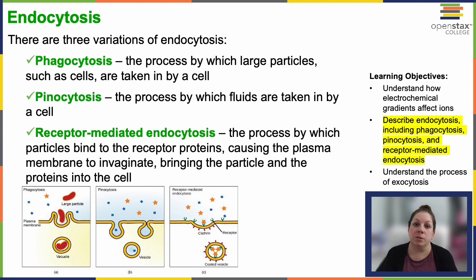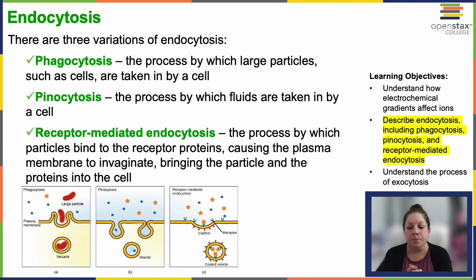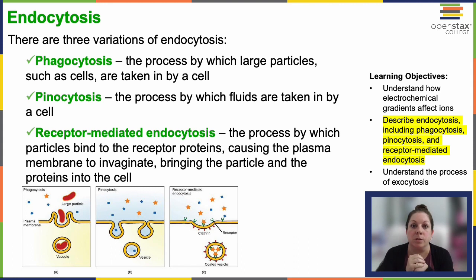There are three variations of endocytosis. First, phagocytosis is the process by which a large particle, like a whole cell, is taken into the cell — cell eating. This is how a lot of your white blood cells engulf bacteria that they come across that don't belong.